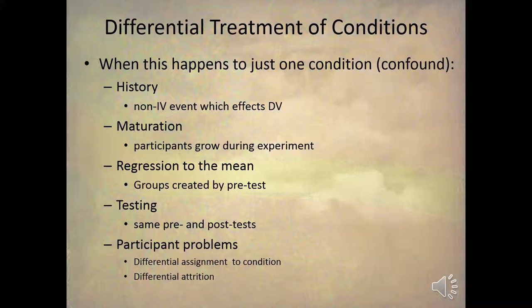There are also ways that, even with a control group, you can get kids who are maturing faster in one group than another. So you always need to watch out for different rates of maturation.